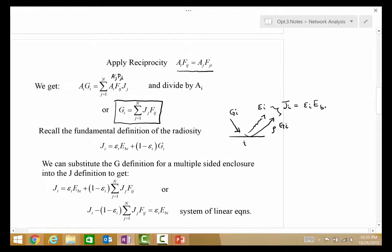In terms of the surface properties, it's Epsilon I EBI plus 1 minus Alpha I GI. Because it's gray and diffuse, we have made Alpha I Epsilon I. So, that's why we get this relationship here.